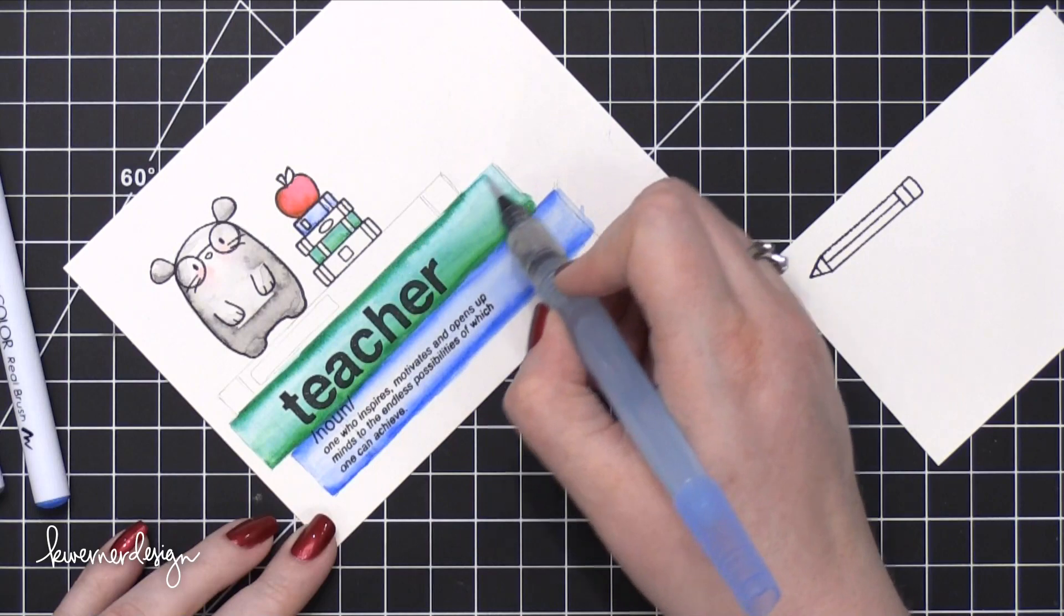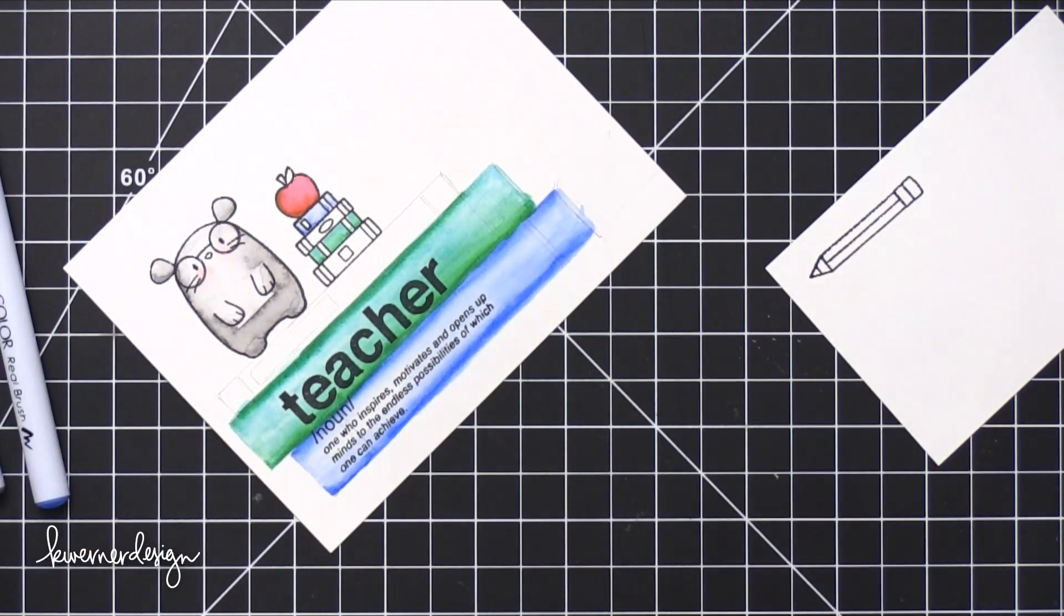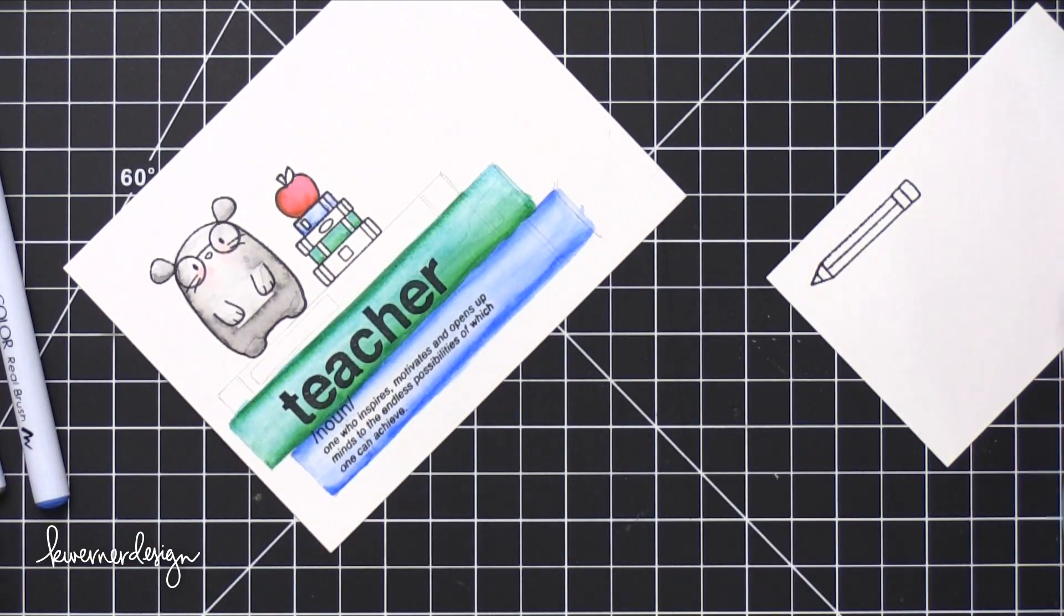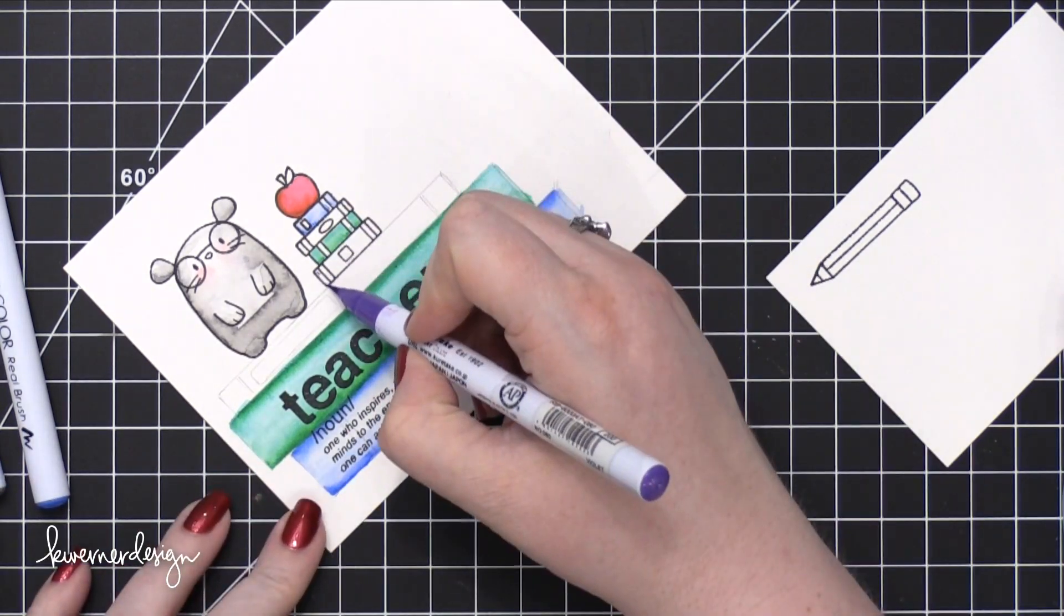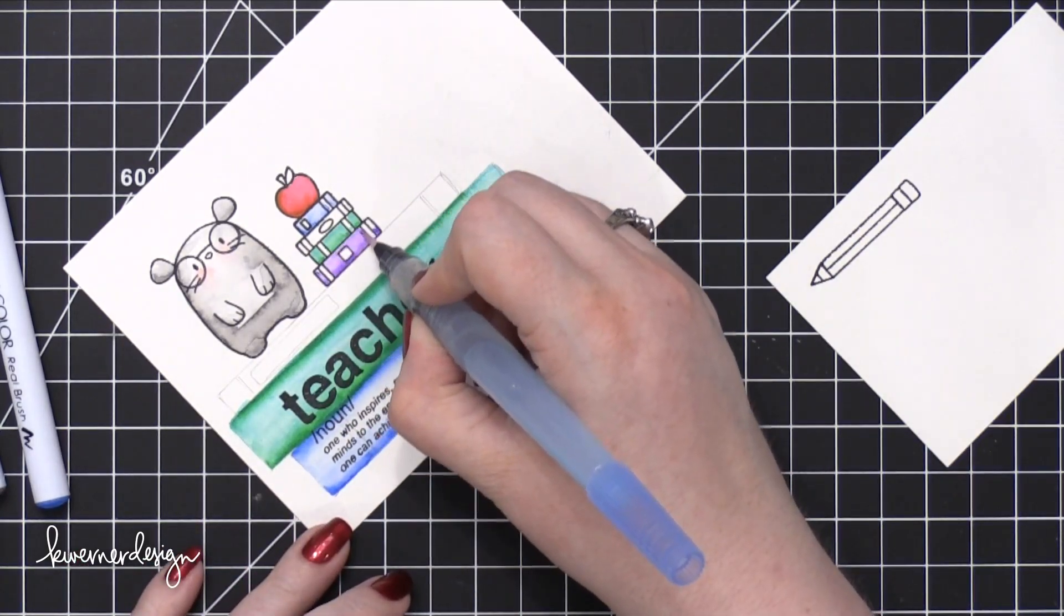So if you wanted to do something like this but use darker colors for the books, you might want to stamp the teacher definition stamp in VersaMark ink and then emboss with white embossing powder. But in this case, just using that black stamped image was just fine.